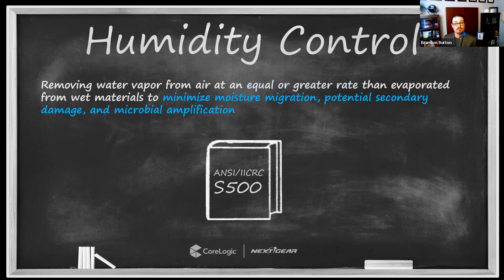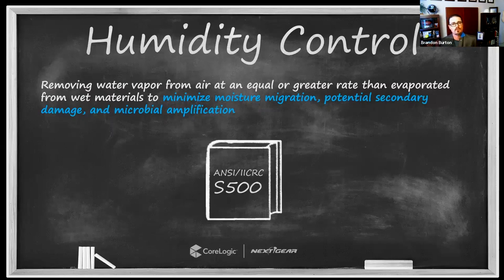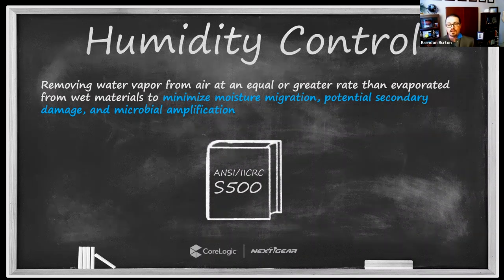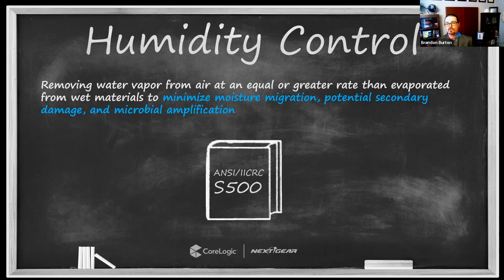The amount of moisture we're removing must be at an equal or greater rate than the water is evaporating in the environment. Equal or greater means control. If we don't remove moisture from the air, we'll have a slower drying rate, moisture spreading through the environment, potential secondary damage to unaffected building materials, and we could allow for microbial amplification — mold growth — because of the high water activity that high humidity creates.